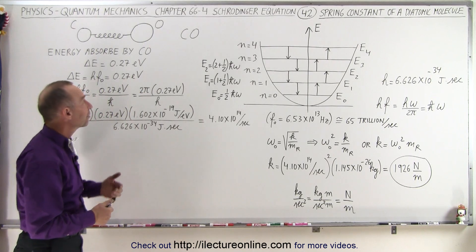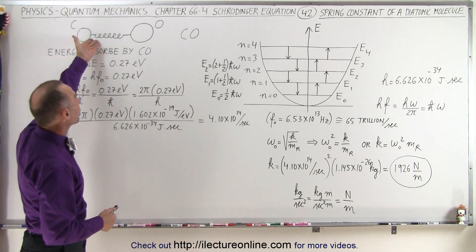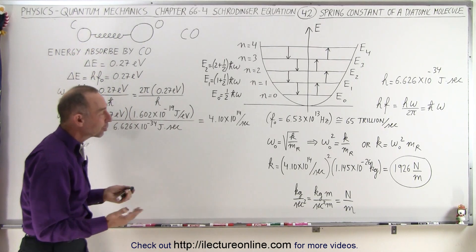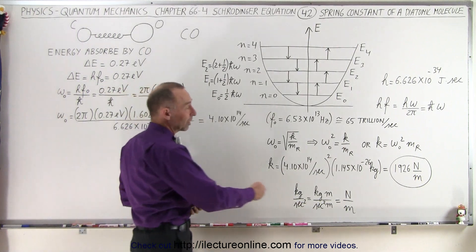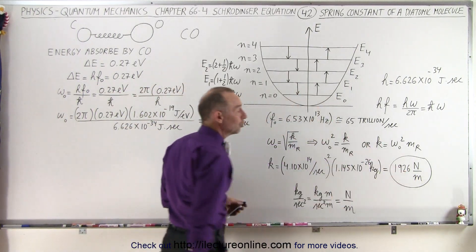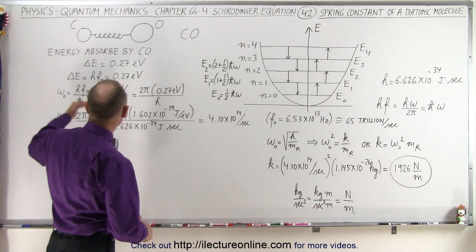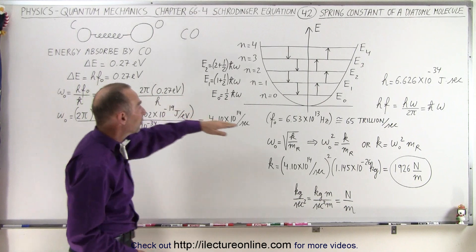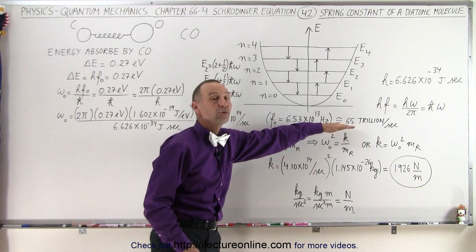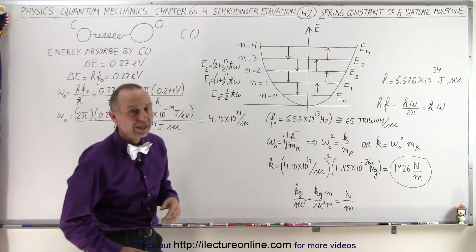For a typical carbon monoxide molecule — a typical diatomic molecule — the spring constant is on the order of 2000 newtons per meter, and the vibrational frequency is on the order of many trillions of vibrations per second.